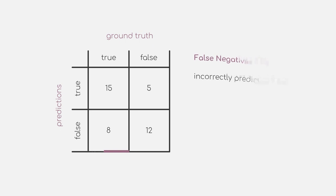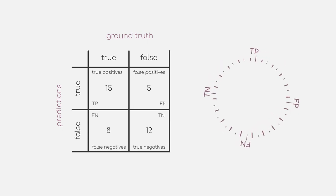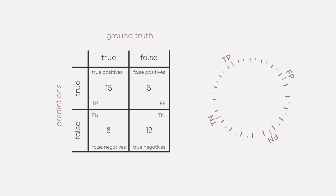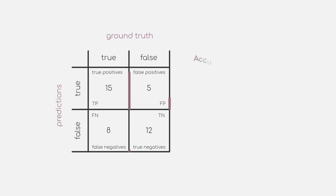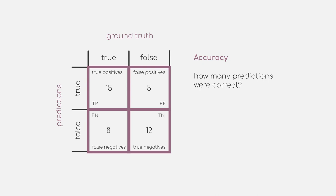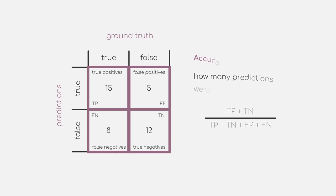With this, you now know the four basic definitions of true positives, true negatives, false positives, and false negatives. On their own, those metrics can already give you some insights, but there are some combined metrics that provide even better insights. The most intuitive metric is accuracy, which simply measures how many of our predictions were correct. In terms of our four key metrics, we add true positives and true negatives and divide them by the total number of samples in our dataset, basically calculating the ratio of correctly classified data points.